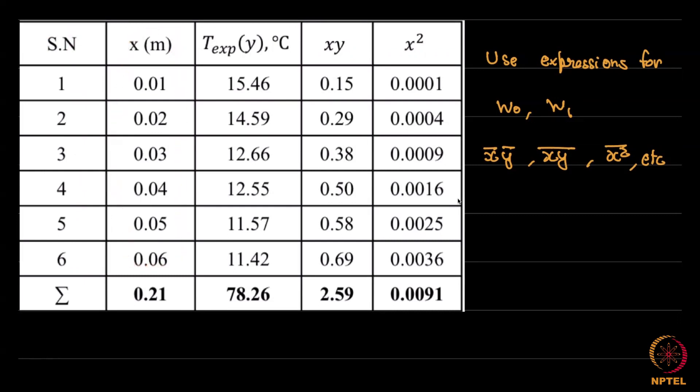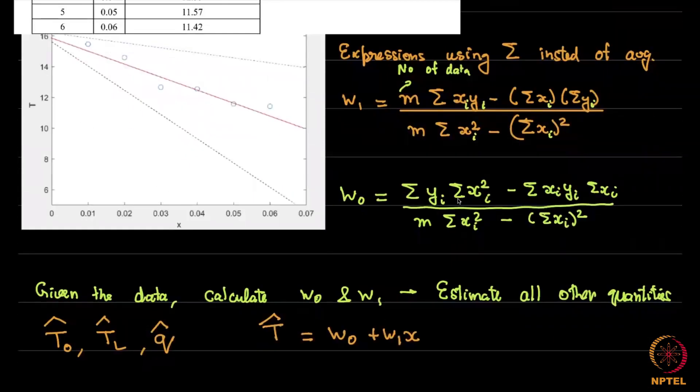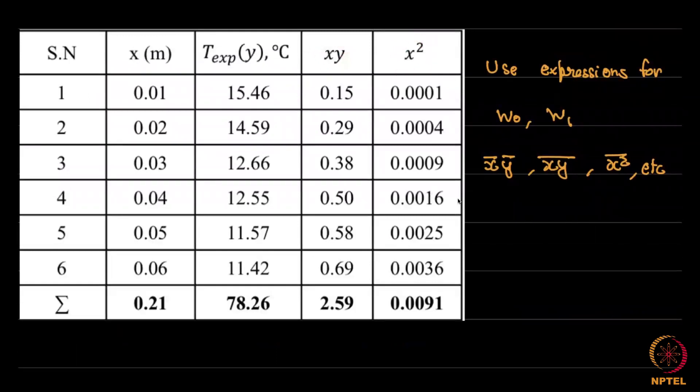This is how we are going to simply write down data. Here is the single variable over which the data depends, the location. Here is the T experimental temperature or what we are calling y here. And then the auxiliary quantities which we require for the expressions shown here, which is sigma xy, sigma x square, etc. Notice this term becomes sigma x, this term here is sigma xy and this term here is sigma x square.